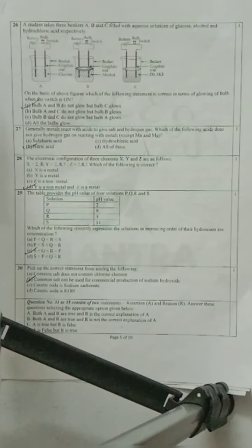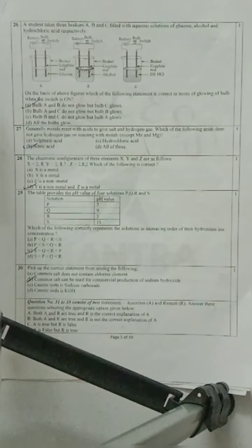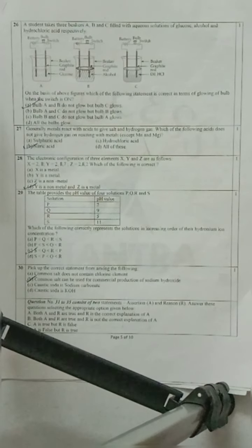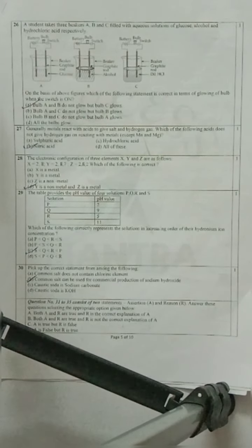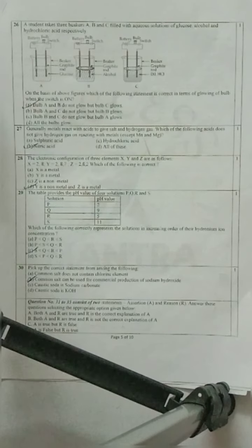Question number 26: A student takes three beakers A, B, C filled with aqueous solution of glucose, alcohol, and hydrochloric acid respectively. Which of the following statement is correct in terms of glowing of bulb when the switch is on? The bulbs in A and B will not glow, but the bulb in C will glow, where hydrochloric acid is present.